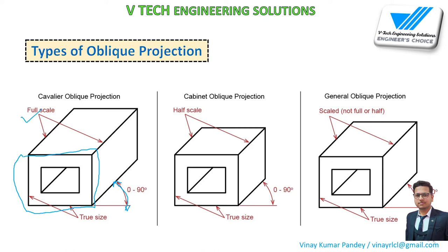If the side projection length is the full true length — for example 300 mm — then we will call it Cavalier Oblique Projection. The degree varies from 0 to 90 degrees. If the length is half — for example if it is 200 mm, we draw it at 100 mm scale — then we call it Cabinet Oblique Projection.